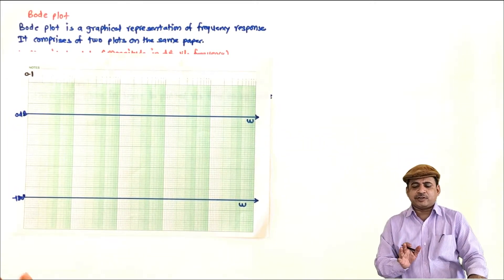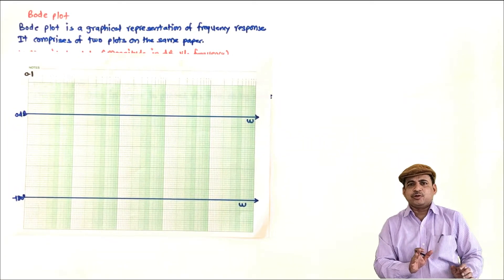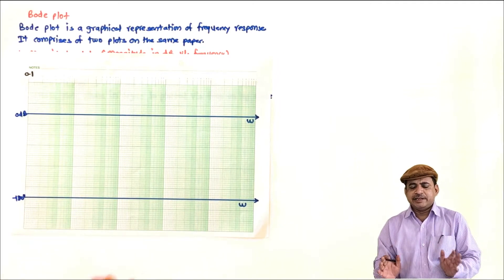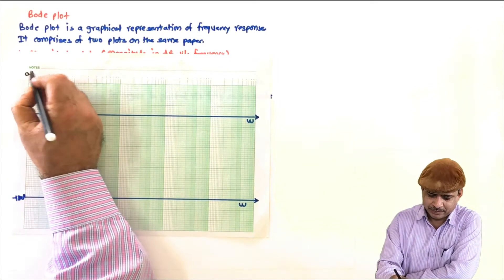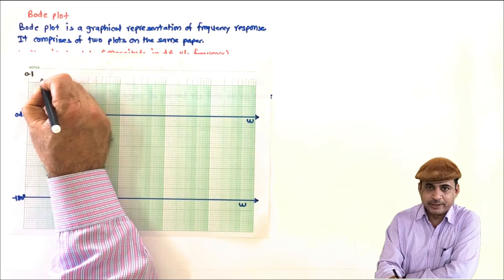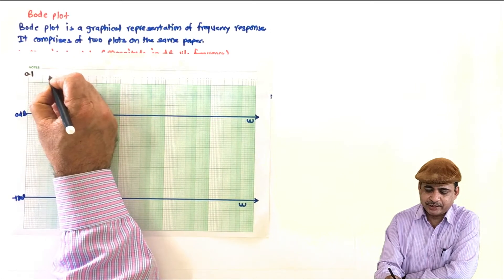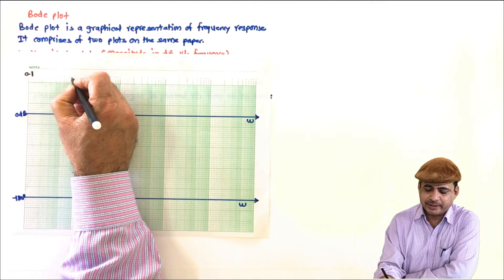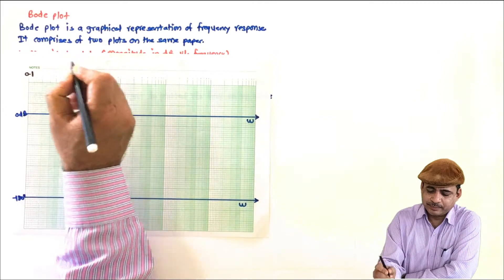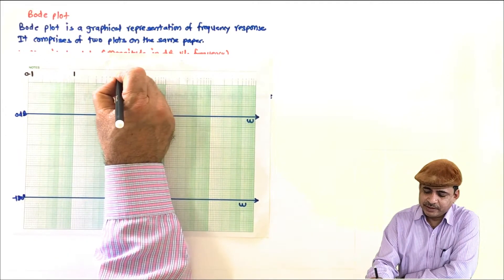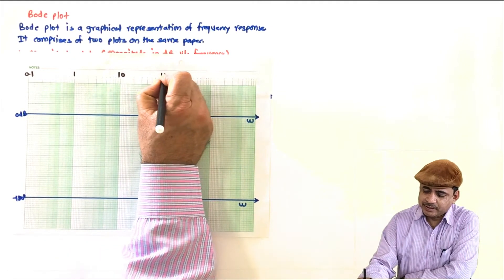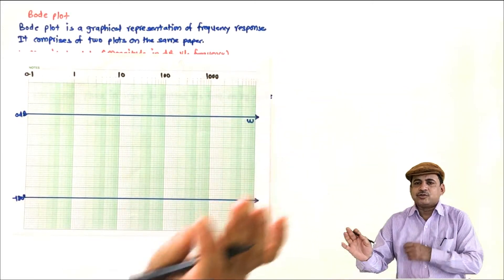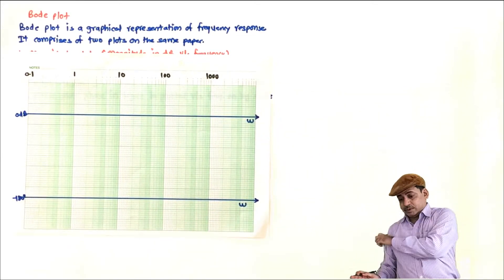The drawback is that we cannot start with 0 because log 0 does not exist, so we can start with any decade. If this is 0.1, then 0.2, 0.3, 0.4, 0.5, 0.6, 0.7, 0.8, 0.9, and 1. Same way, this will be 10, this will be 100, this will be 1000, and so on.